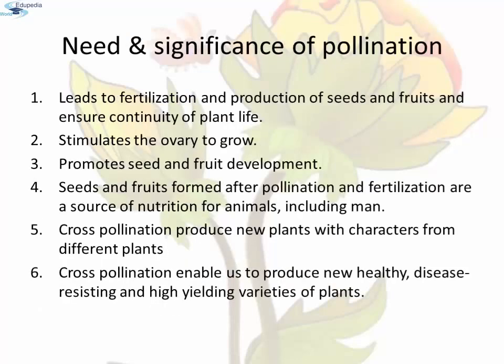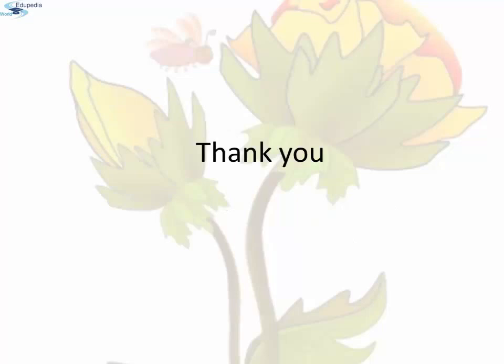Needs and significance of pollination: It leads to fertilization and production of seeds and fruits. It always ensures the continuity of plant life. It stimulates the ovary to grow and promotes seed and fruit development. The seed and fruit formed after pollination and fertilization are a good source of nutrition for animals including human beings. Cross pollination produces new plants with characters from different plants, enabling us to produce new healthy, disease-resisting and high-yielding varieties of plants. In the next video we will be discussing about pollen germination, fertilization, etc.